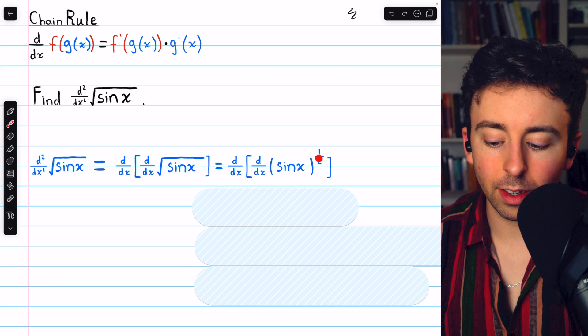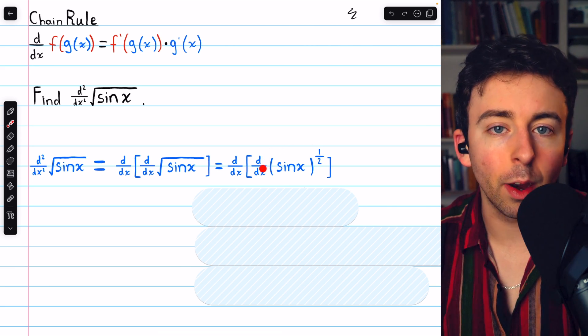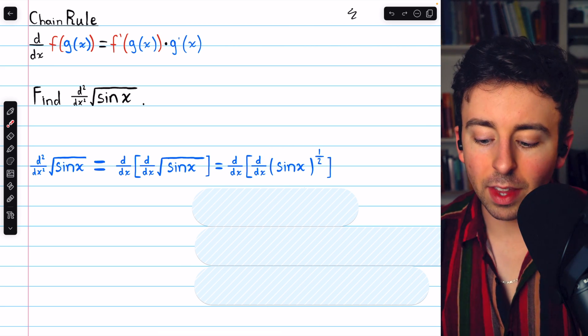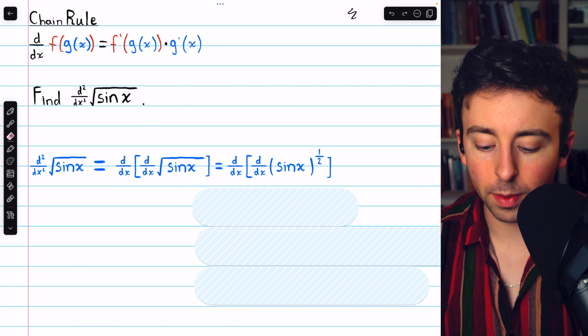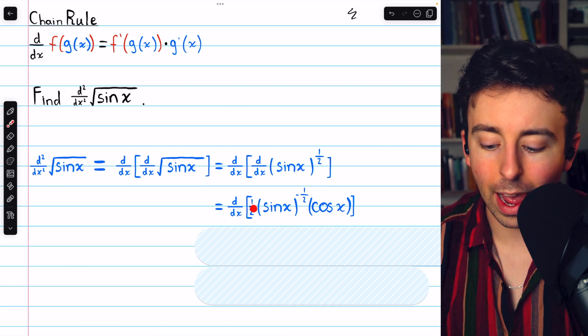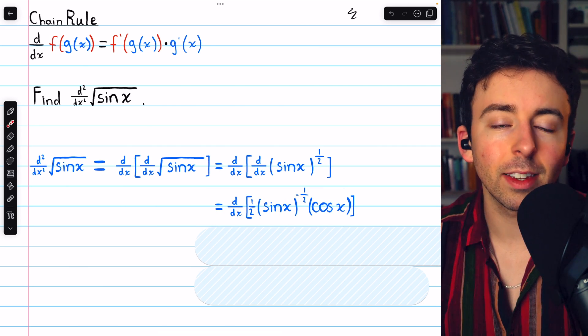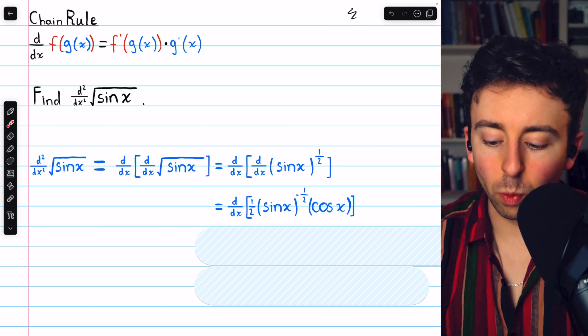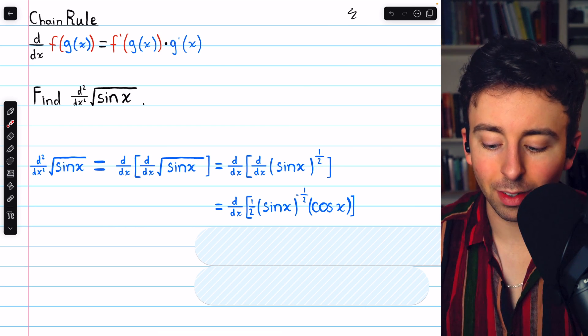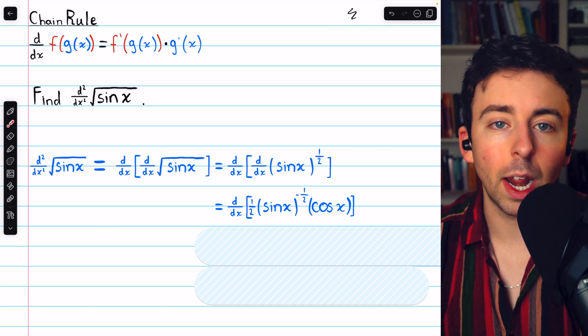We'll use the power rule for this, so bring the power of one-half out front as a factor, and then reduce the power by one. So we have one-half times sine x, leaving the inside function unchanged, and then one-half minus one gives us our new power of negative one-half.